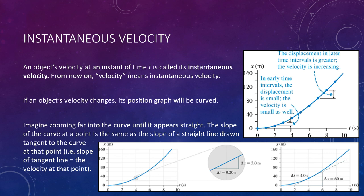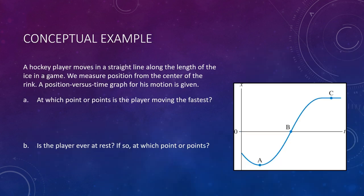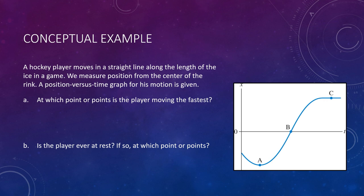Let's put everything together and look at an example. A hockey player moves in a straight line along the length of the ice. We measure the position from the center of the rink — 0, or the origin, is the center of the ice. A position versus time graph for his motion is given. The first question: at what point or points is the player moving the fastest?